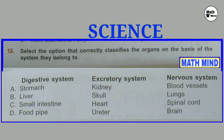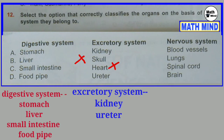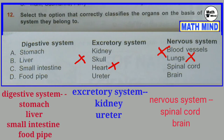Question number 12: Select the option that correctly classifies the organs on the basis of the system they belong to. Stomach, liver, small intestine and food pipe are organs of the digestive system. Kidney and ureter are both organs of the excretory system. Blood vessels and heart are organs of the circulatory system. So correct option is D: Food pipe is organ of the digestive system, ureter is organ of the excretory system, brain is organ of the nervous system.